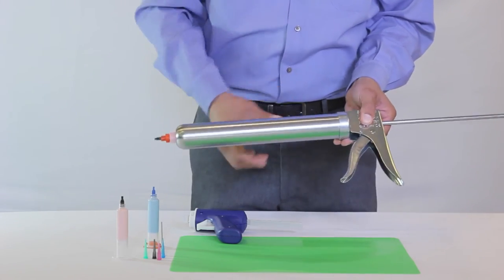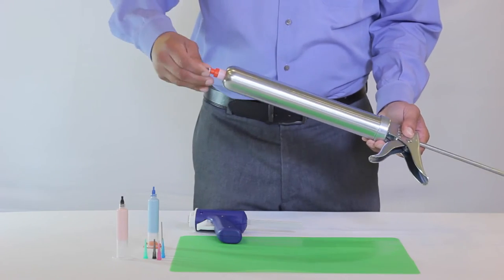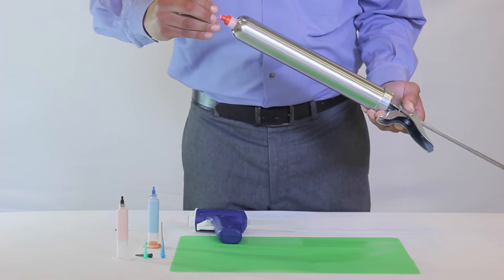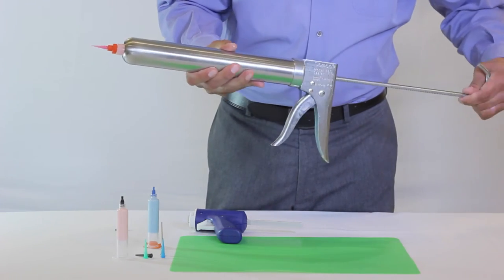Before engaging the rod, remove the tip cap and apply the desired dispensing tip. Doing this before you engage the rod will limit material spillage due to the pressure of the rod against the stopper.